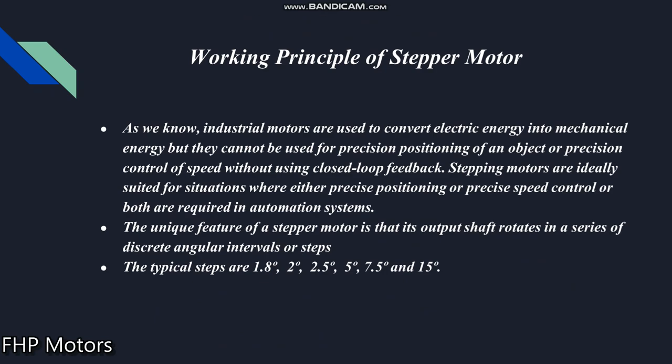Now we will see how the stepper motor works. As we have seen, other motors convert electrical energy into mechanical energy and rotate continuously at high speed and torque. But one drawback of all these motors is we cannot use them for the precision positioning of an object or the precise control of speed without using some closed loop feedback system. So the stepper motors are suitable for situations where either precision positioning or precise speed control, or both, are required in automation systems.